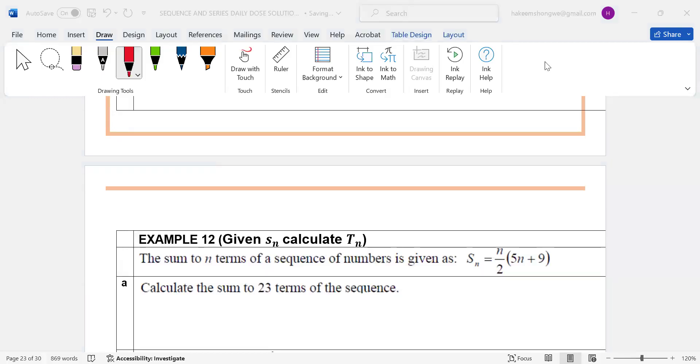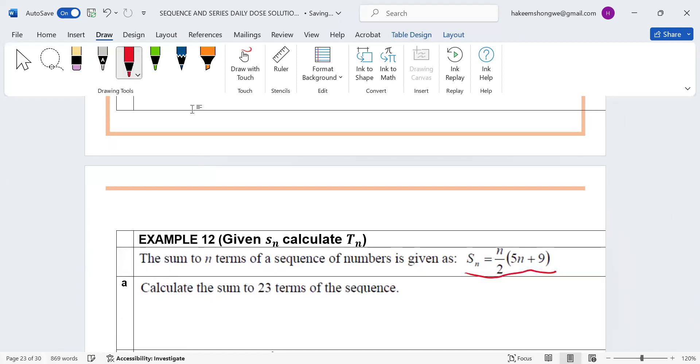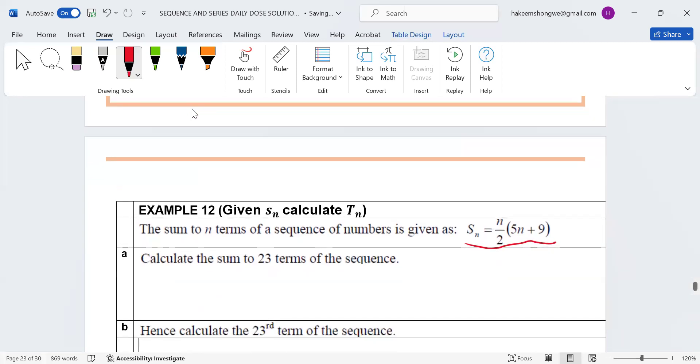In case you didn't hear what was going on yesterday, we spoke about this. As a learner, you might be given a sum. The following sum here is not a sum of an arithmetic or geometric sequence, it's just a sum. You are given the general formula of a sum. If a learner is given a general formula of a sum, the learner can then be asked to determine the sum of the first 23 terms.